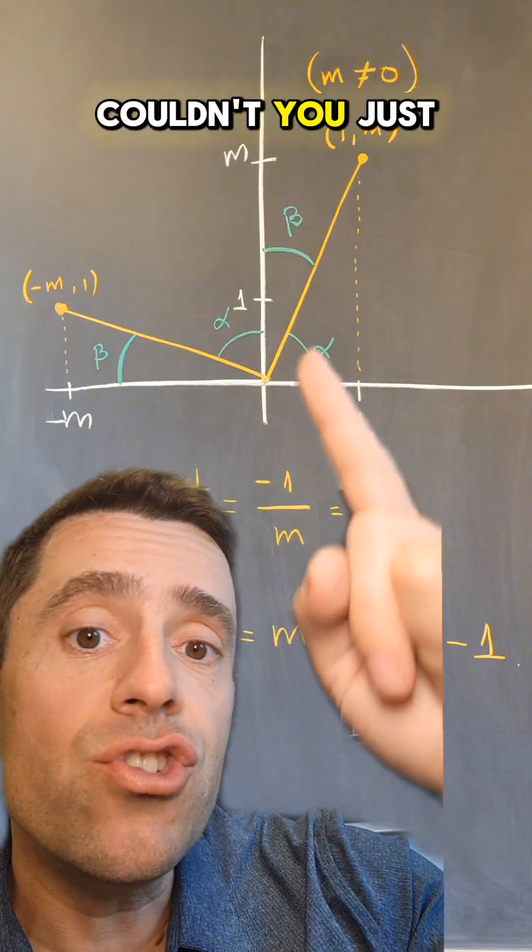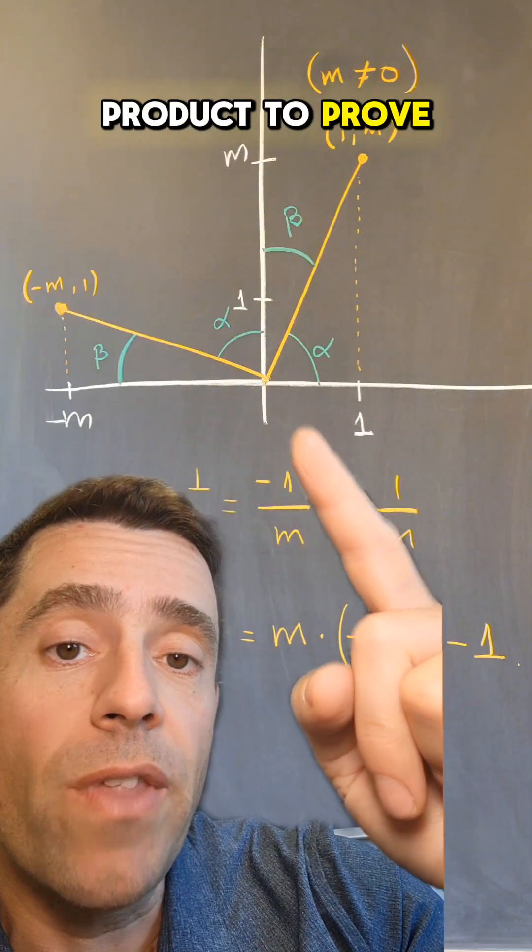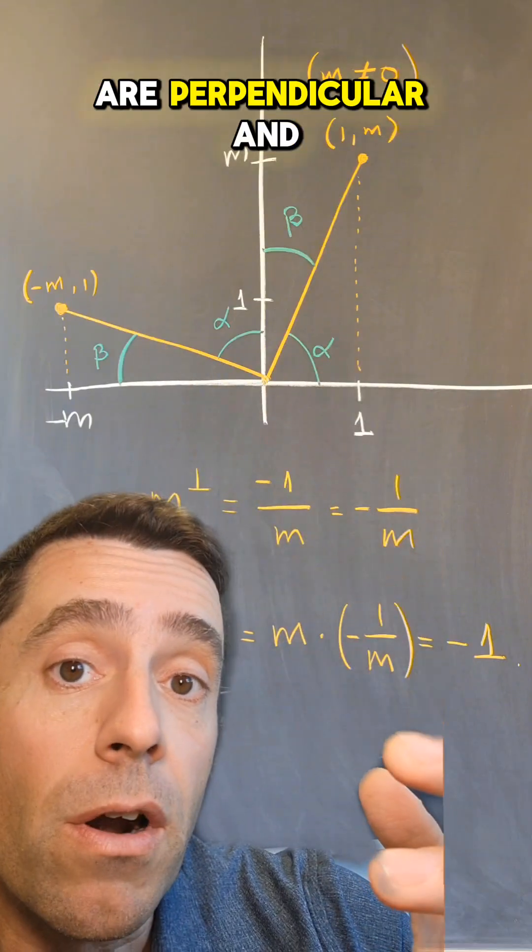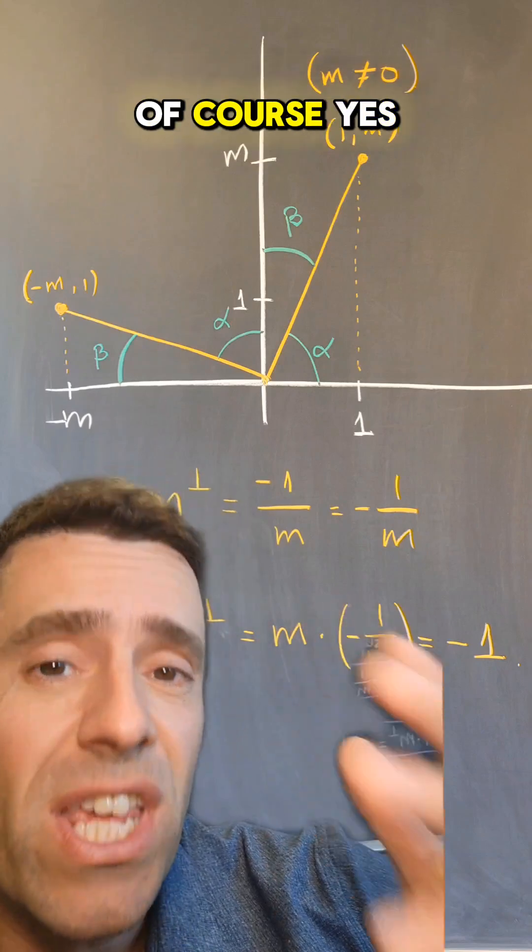And what they're asking is, couldn't you just use the dot product to prove that those two lines are perpendicular? And the answer is, of course, yes.